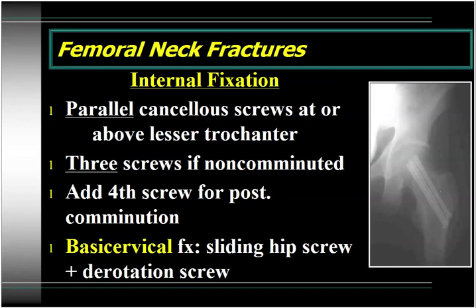For internal fixation, use parallel cancellous screws placed at or above the level of the lesser trochanter. Avoid placing screws below the lesser trochanter because that creates a significant stress riser in the proximal femur, and these patients can fracture if they have cannulated screws in that region. You can typically use three screws if the fracture does not have significant comminution. If significant posterior comminution exists, you can consider adding a fourth screw. For the base-of-neck fracture, a good implant of choice would be a sliding hip screw plus or minus a more proximal derotation screw.